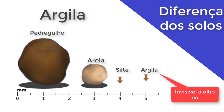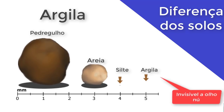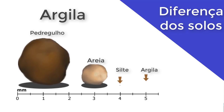Logicamente, os grãos de argila também vão variar — existem grãos maiores e outros menores. Porém, um grão de argila pode chegar a 10 angstroms, o que é 0,00001 milímetro. Isso é quase 15 mil vezes menor do que um fio de cabelo. Por conta do tamanho dessa partícula, os grãos de argila têm um tipo de ligação conhecida como ligação atômica.